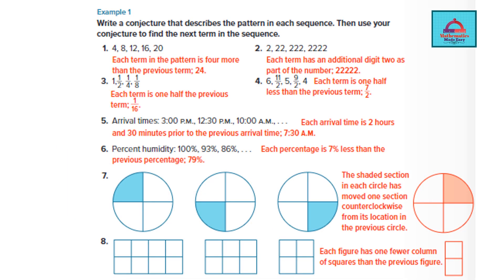We had already discussed questions 1 to 4. If you see question 5 here, each time the arrival is 2 hours and 30 minutes prior to the previous time. So if you see the time is decreasing by 2 hours and 30 minutes. Then again it decreases by 2 hours and 30 minutes.